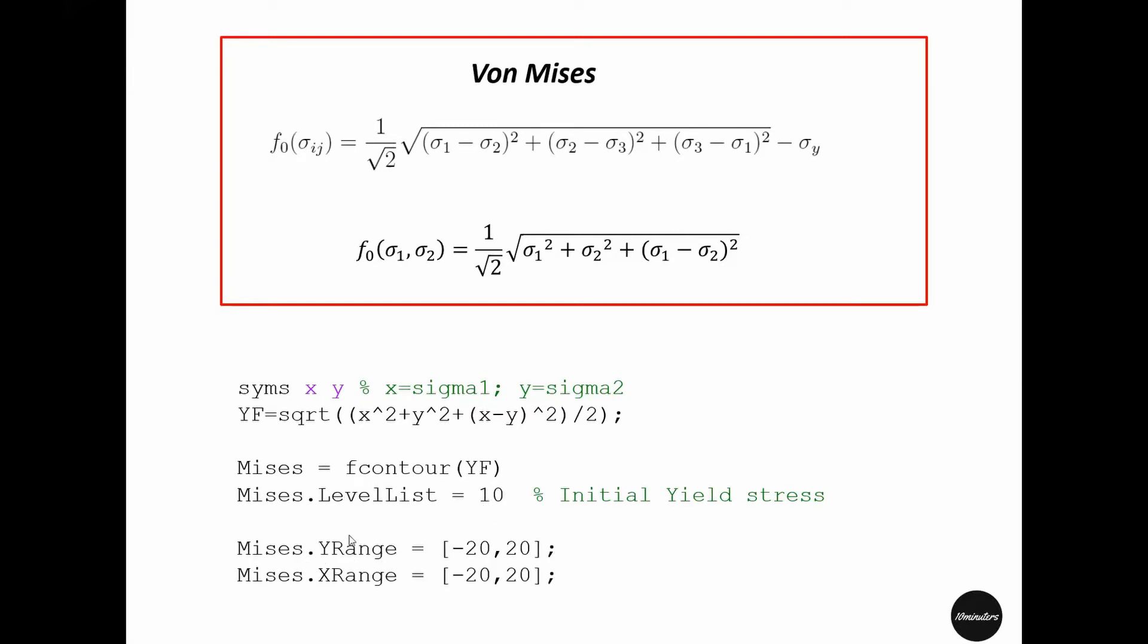Next we define the size of the window of the plot and the minimum and maximum limit of this plot is advised to set double of the initial yield stress. So it is 10 so we set it minus 20 to 20 and same for x.